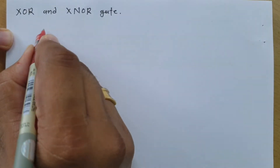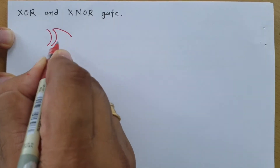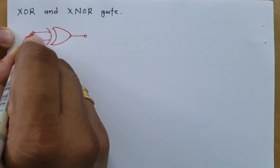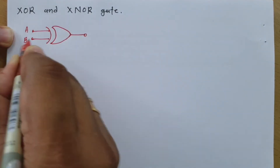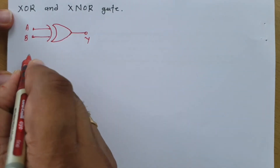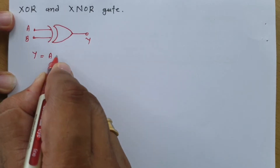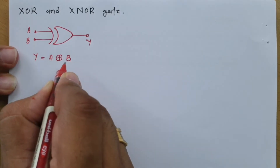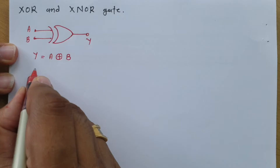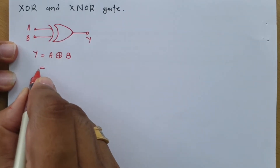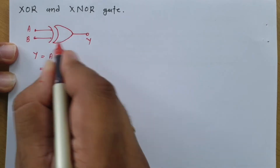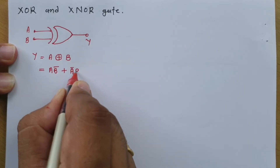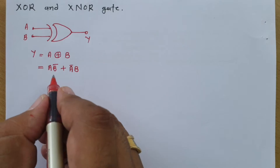As you see the symbol of XOR gate, this is what it looks like, where this is my output and these are my inputs. Let us say my inputs are A and B and this is my output Y. So my output Y is A XOR B. Mathematically, I can represent output Y equals A XOR B. Another way of mathematical representation is the arithmetic logic form: it is A·B̄ plus Ā·B.